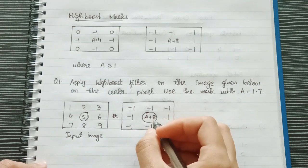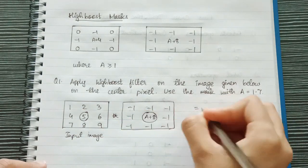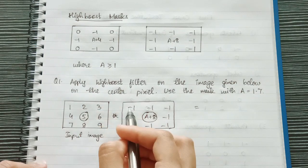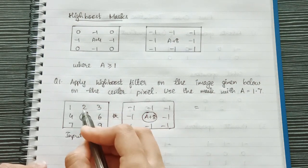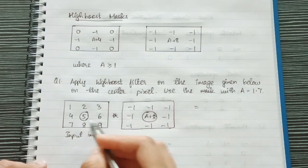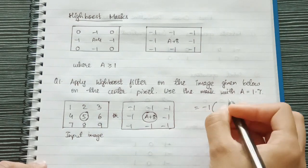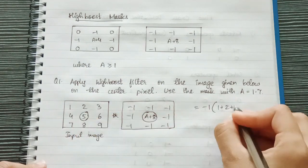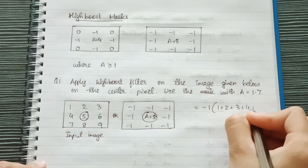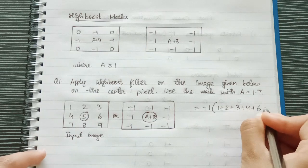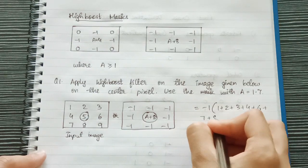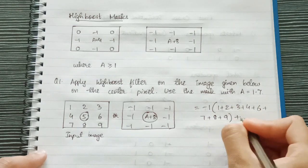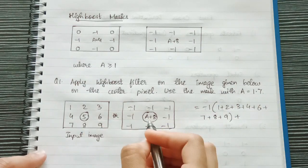Now we have to apply it on the center pixel so we will apply it on the center pixel. This is our rotation. Now what is the value that we will get? We have to multiply all of these values. We just take -1 outside and we will add all of these: 1, 2, 3, 4, except for 5 we will add the others.